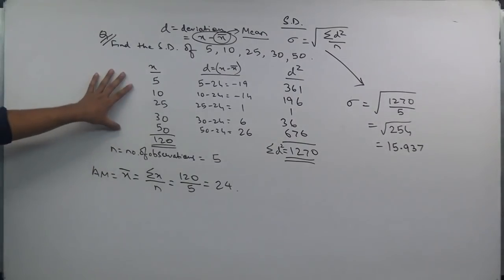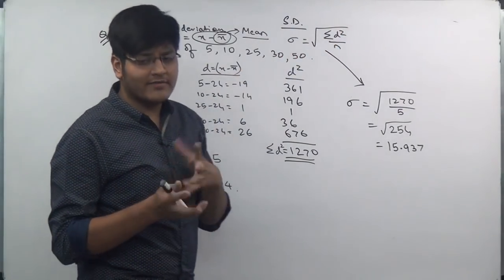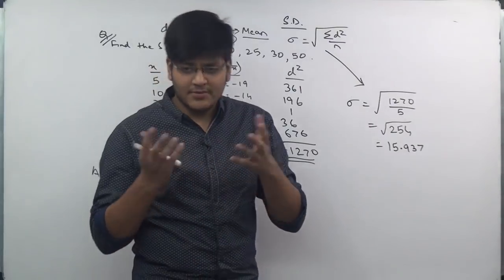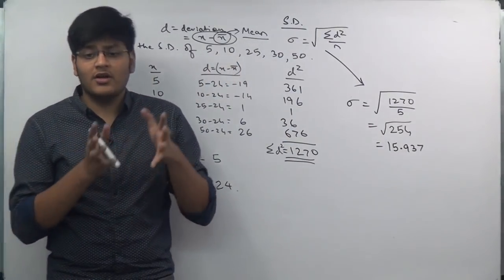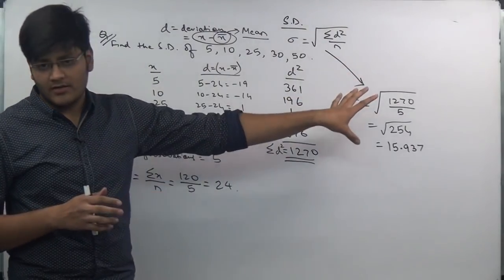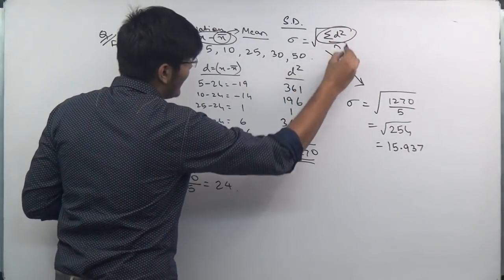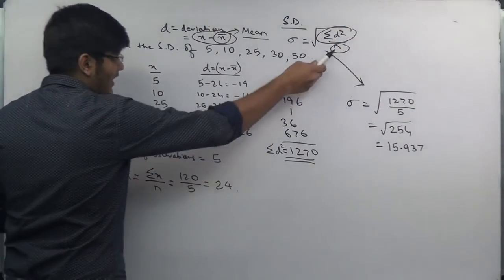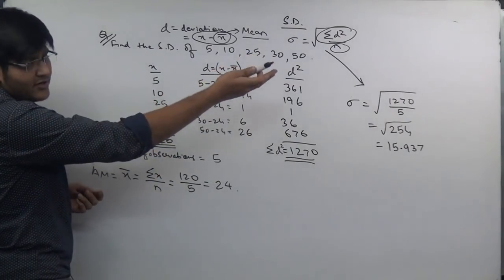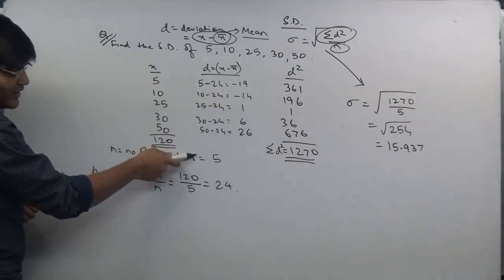So the process is: write the formula, then find only what is required. Check the formula and separate out individual units needed. Here we only need Σd² and n — nothing else. You don't need to total the d column since summation of d is not asked for. Find d, then d², then total the d² column.